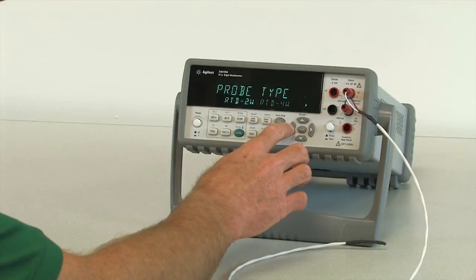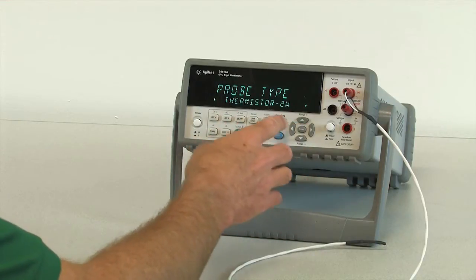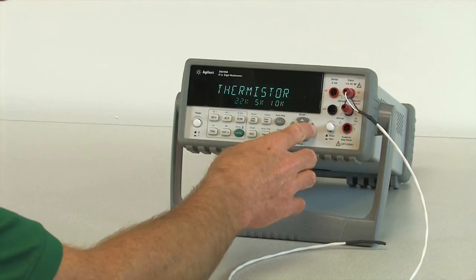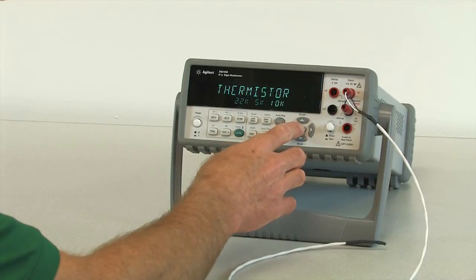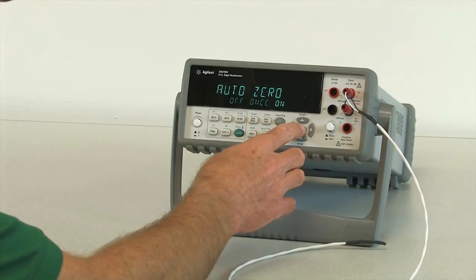As you can see, it can measure RTDs or thermistors. So I'm going to select a two-wire measurement for our thermistor. Then we need to select the value. This is a 10K thermistor, so I'll select 10K. I'm going to select the rest of the defaults for our measurement.